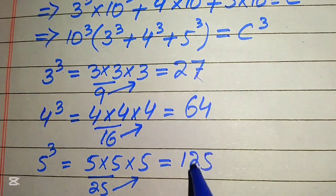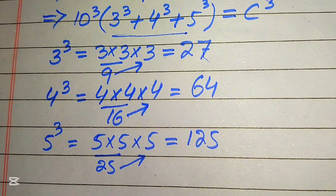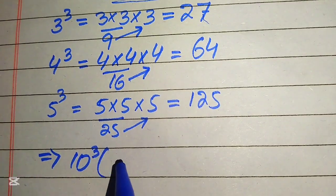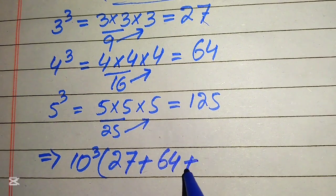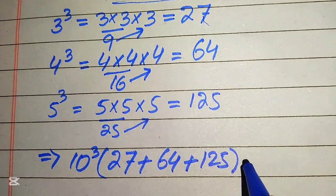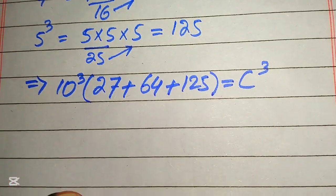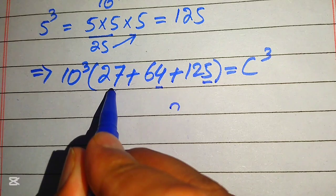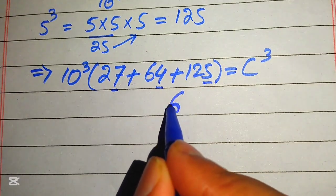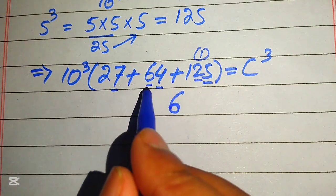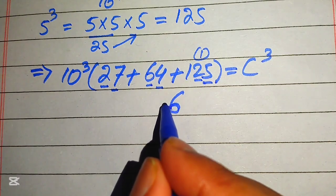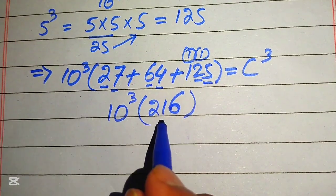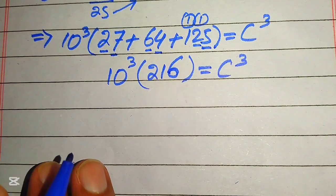Now we replace these three values in our equation: 10 cubed multiplied by (3 cubed + 4 cubed + 5 cubed) becomes 10 cubed times (27 + 64 + 125), which equals C cubed. Summing those: 5 + 4 = 9, 9 + 7 = 16, carry the 1; 2 + 6 + 2 + 1 = 11, write 1 carry 1; 1 + 1 = 2 — giving us 216. So 10 cubed multiplied by 216 equals C cubed.